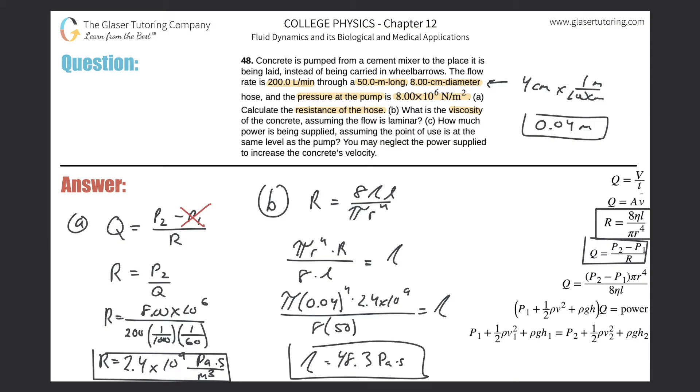All right, so there's the viscosity. So that takes care of that. Now let us see. It says how much power is being supplied assuming the point of use is at the same level of the pump. Okay, so now what we can do is—well, you can actually use this formula if you want. It's a nice easy one. You can basically use this: that the power will be equal to the gauge pressure multiplied then by the flow rate.